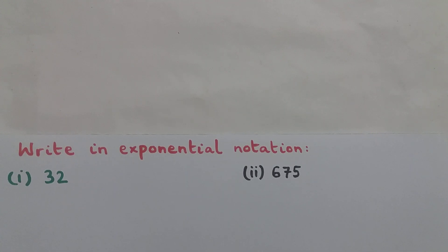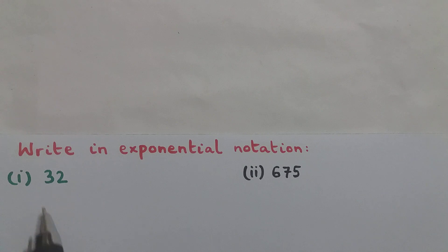Welcome. The question says write in exponential notation, and they have given us two numbers: the first number is 32 and the second number is 675. So we have to write these two numbers in exponential notation.